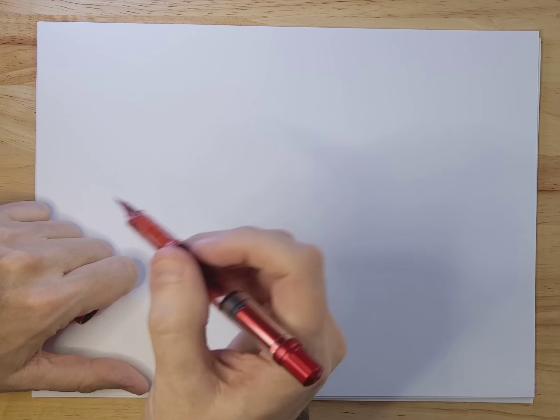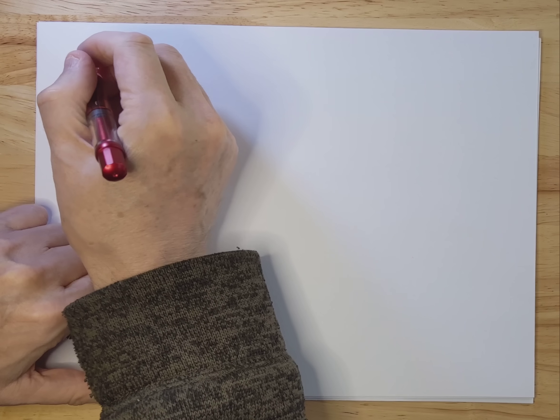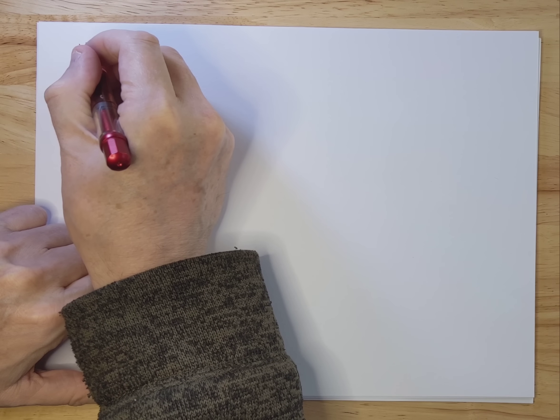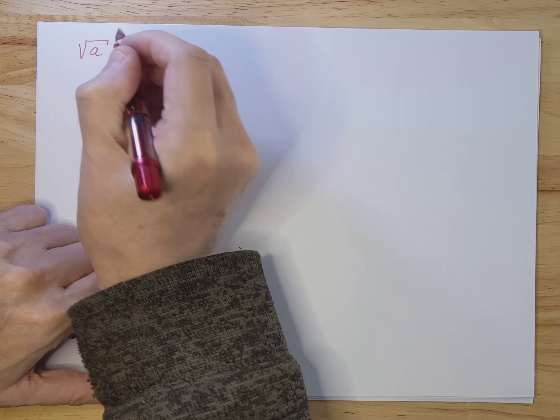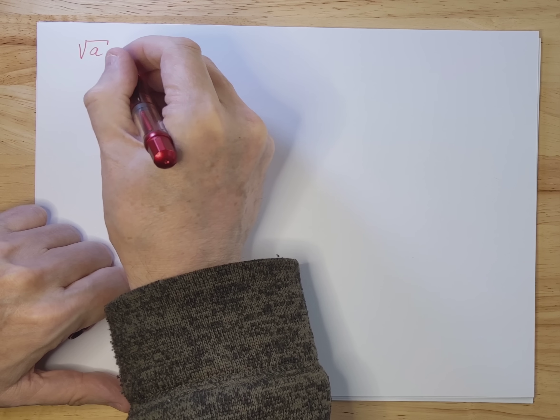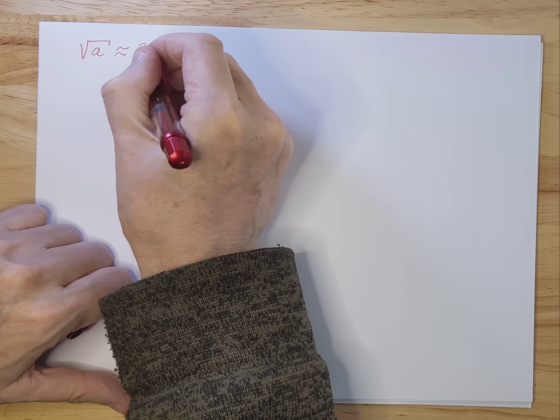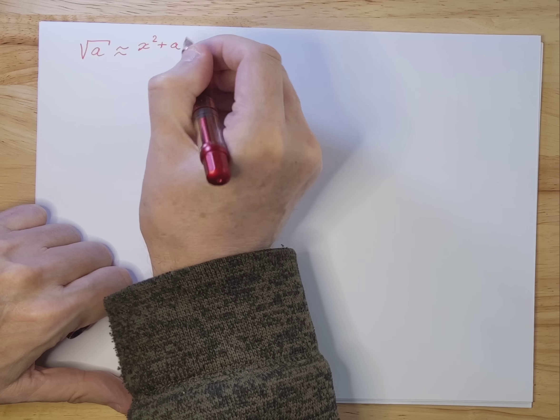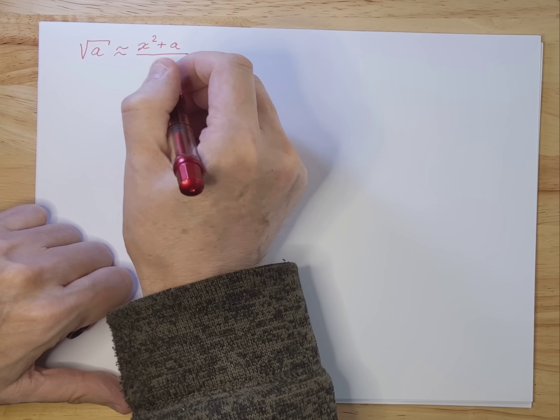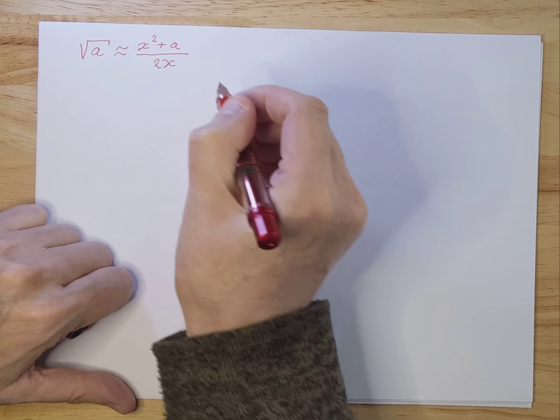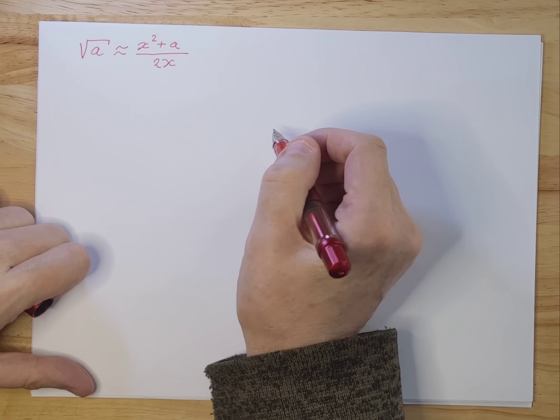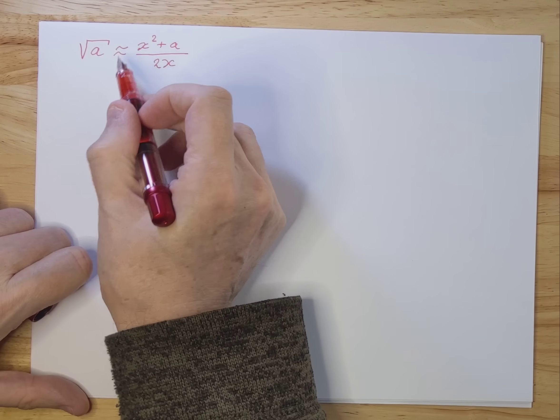Today I'm going to talk about a trick to calculate the square root of a number with a very simple formula. The formula goes as follows: x squared plus a divided by 2x. Let me give you an example so that you understand what this all means.